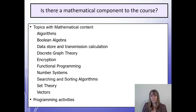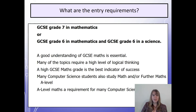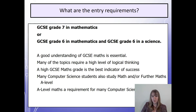So is there a mathematical component? Of course, yes there is. It's not the same as the Maths A-Level — you won't be studying things like calculus. But there are a large number of mathematical concepts which are closely tied into computer science. For instance, Boolean algebra, discrete graph theory, and searching and sorting algorithms. So it is for this reason that we actually ask for a grade seven in mathematics at GCSE, or a grade six with a grade six in science to support it.